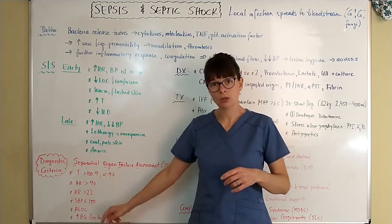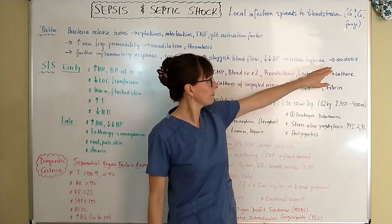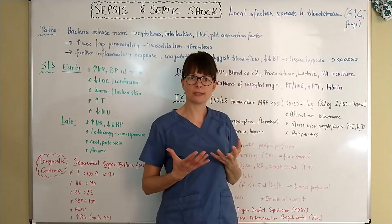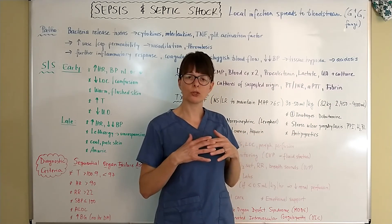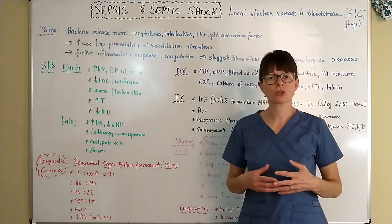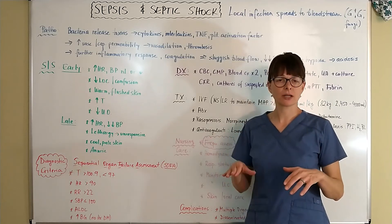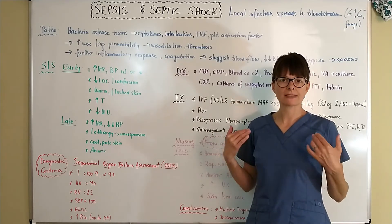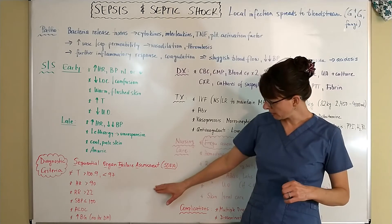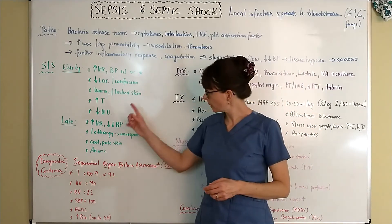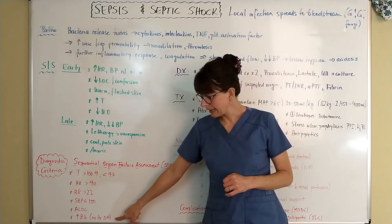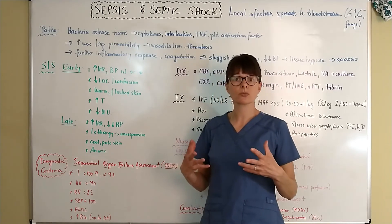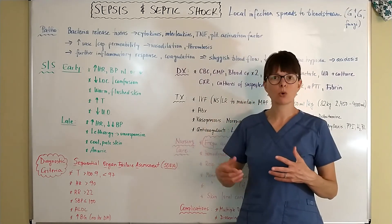The respiratory rate greater than 22 relates to the patient developing metabolic acidosis. If the body becomes too acidotic, the respiratory and renal systems work together — by increasing the respiratory rate, the patient is trying to blow off the acids building up in the system by expelling CO2 through the respiratory tract. Other diagnostic criteria include altered level of consciousness, seen in both early and late symptoms, as well as an elevated blood sugar level in a patient with no history of diabetes — because the stress response causes cortisol release, leading to elevated blood sugar.